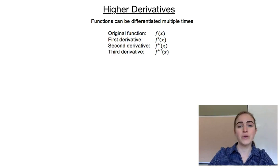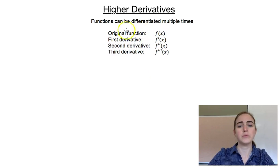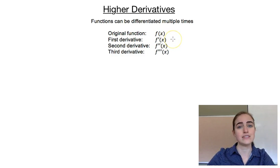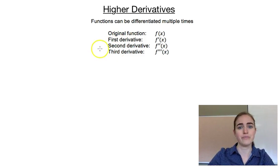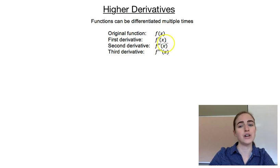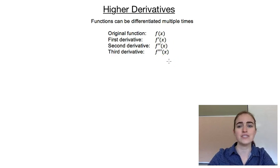Before we start differentiating, we need to have a bit of a closer look at our notation. One of the notations we were using was calling our original function f of x, and we were calling our derivative f dash of x. Now we're going to get a bit more specific and call this the first derivative. If we were to differentiate again, our second derivative would be f double dash of x, and our third derivative would have three dashes. And you can continue that on as well.